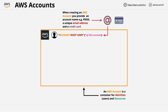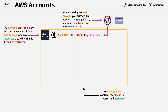Initially, the account root user is the only identity created with an AWS account. The account root user has full control over that one specific AWS account and any resources created inside it, and this cannot be restricted — it will always have full access to everything within that one AWS account. This is why we need to be really careful with the account root user, because if the username and password ever become known, the results can be disastrous, as the credentials can be used to delete everything within the AWS account.